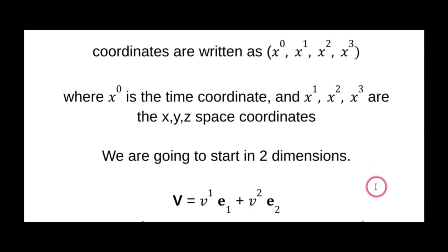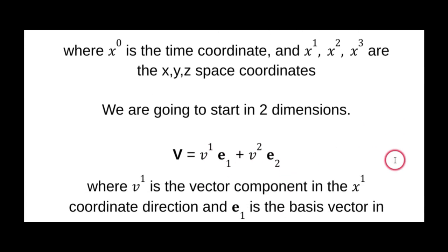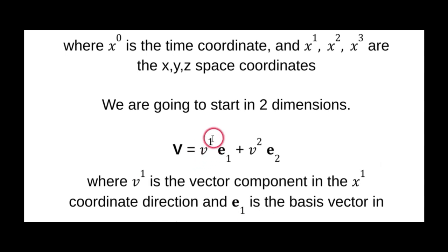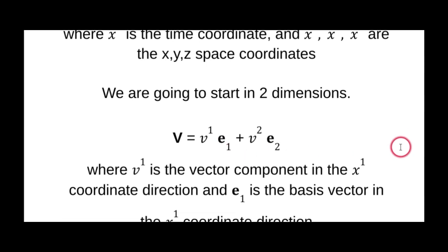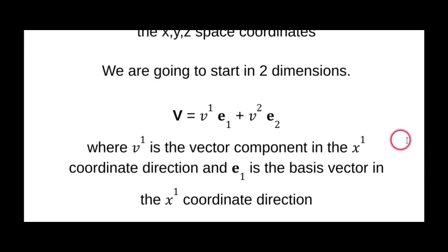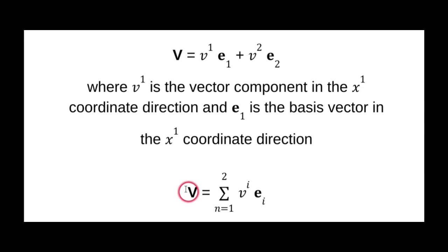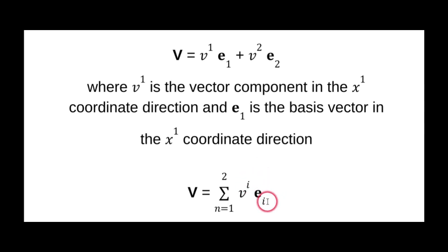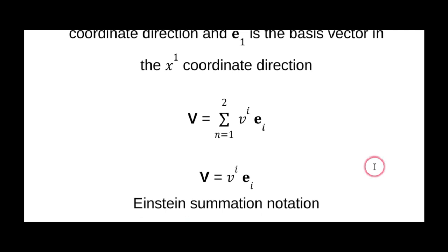We write a vector as a linear combination of its components and basis vectors. For example, v¹ is the vector component in the x¹ coordinate direction and e₁ is the basis vector in that direction. We can generalize this as the sum from n=1 to 2 of vⁱeᵢ. Einstein noticed that every time he ran into upper and lower indexes being the same, there was always a sum, so he dropped the summation symbol. This is called the Einstein summation notation, used widely in relativity.